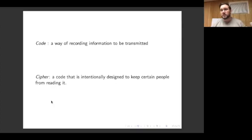So let's look at the definitions of these three things. A code is just a way of recording information to be transmitted. It's not necessarily designed to keep the information secret, it's just a way of recording what you want to communicate.